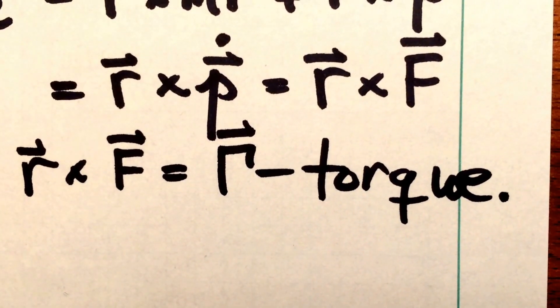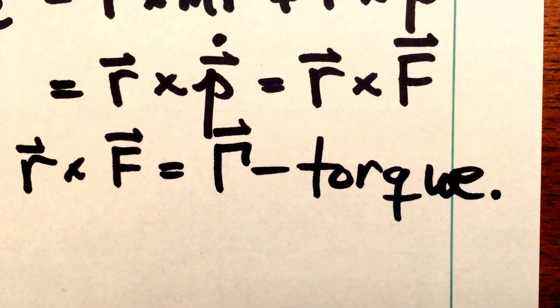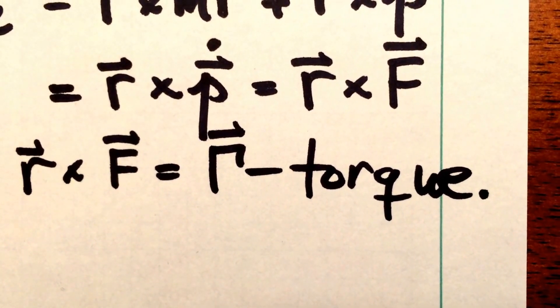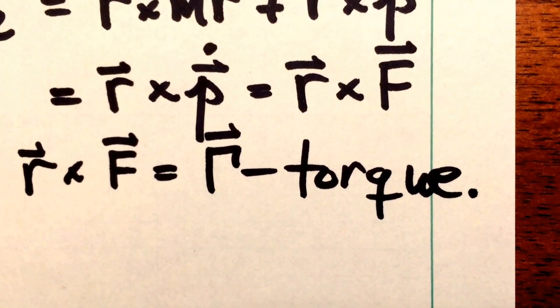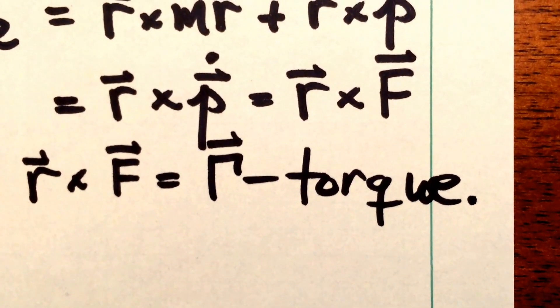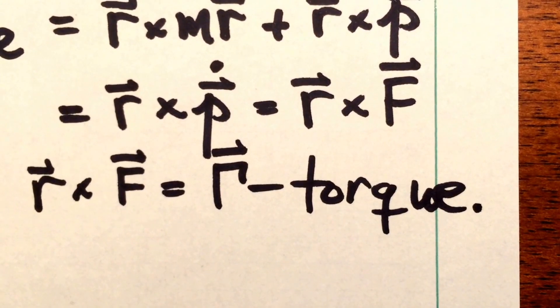We usually cast the product r crossed into f as gamma, capital gamma, the torque. So when you have a force whose cross product with the position vector is non-zero, that results in a torque on the particle.